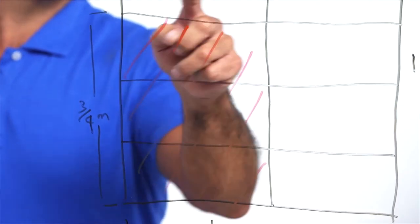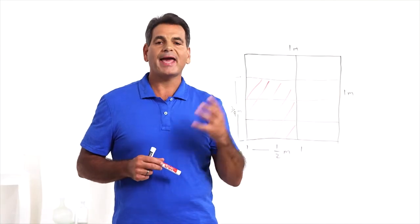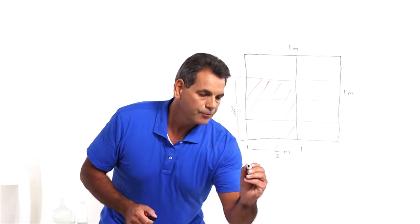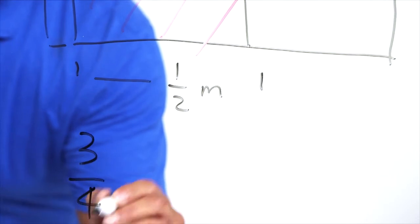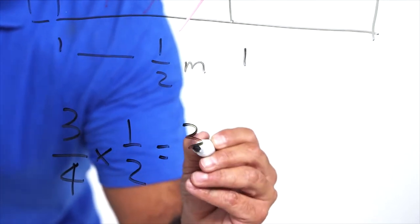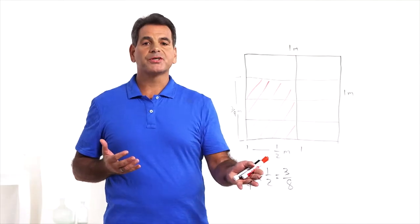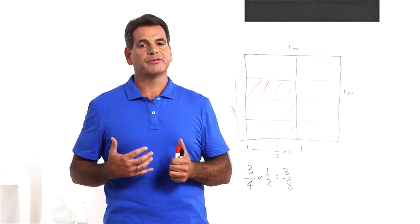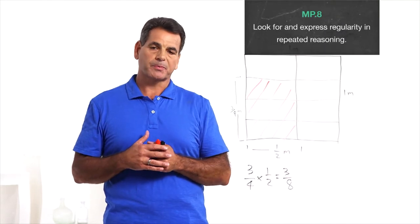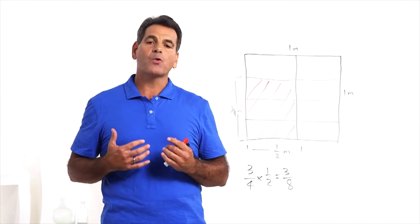Now we can look at the model and find the fractional part. 1, 2, 3, 4, 5, 6, 7, 8. So 1, 2, 3 eighths of the model is shaded in, which means that three-quarters times one-half equals three-eighths. By relating the models to the equations, then investigating the numerator and the denominator of the solutions, students will discover the algorithms for multiplying fraction by fraction. After a bit more practice with models, they should be taken away, and the students should be able to perform the operations using just the algorithm. And now on to standard 5.NF.7.